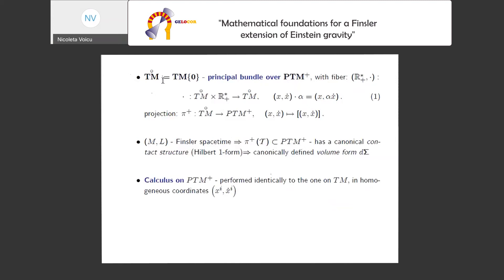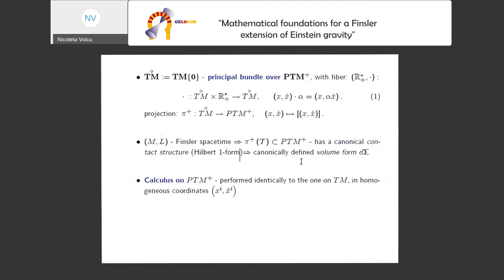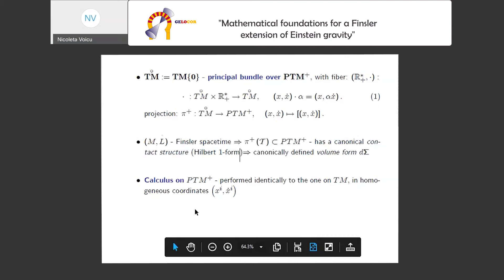The construction goes by the notion of associated bundle. PTM+ has quite a rich structure. First and foremost, the slit tangent bundle — the tangent bundle without the zero section — is a principal bundle over PTM+ with fiber R+. If we have a spacetime structure and stay away from lightlike directions, we also have a canonical contact structure given by the Hilbert one-form, which canonically defines a volume form. Although the construction seems complicated, calculations in coordinates are simple because PTM+ is a Grassmannian with homogeneous coordinates, so we can basically use coordinates as we know them from TM.